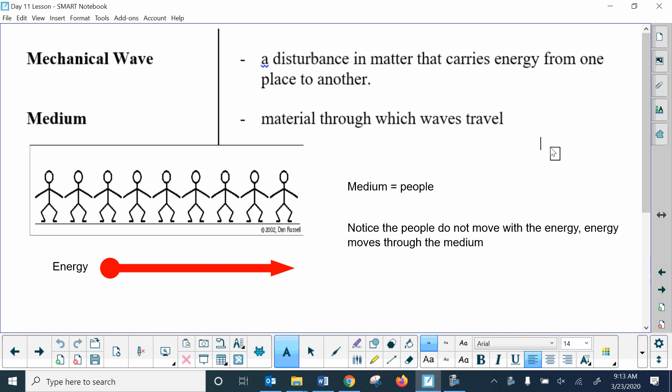You have a PDF of this, but it doesn't show you the GIFs, so I'm trying to have them on this video. Mechanical waves are just a disturbance in matter that carries energy from one point to another, so it takes energy from one point to another, and the medium is the material through which the wave travels. If you look at this GIF of a simulation of a stadium wave, the people are the medium because that's what the energy is traveling through, and the energy is moving left to right across the screen through the GIF.